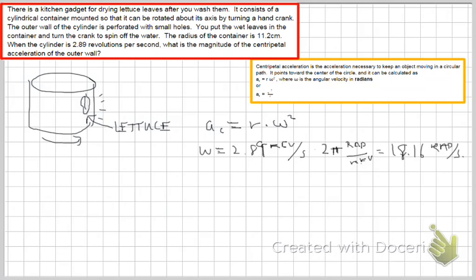Then we can drop that in, making sure that we convert the radius into meters. So the acceleration that we calculate is going to be 0.112 meters times the number that we just got.